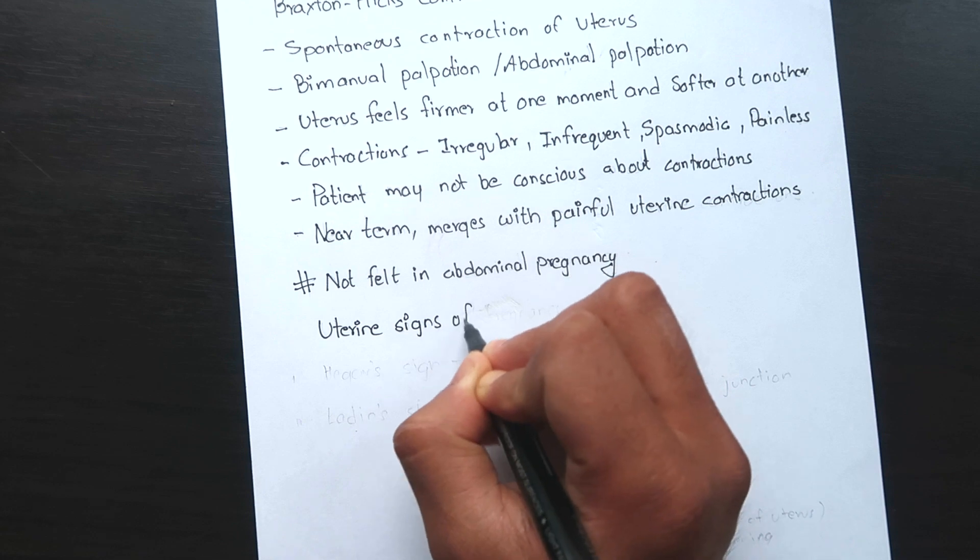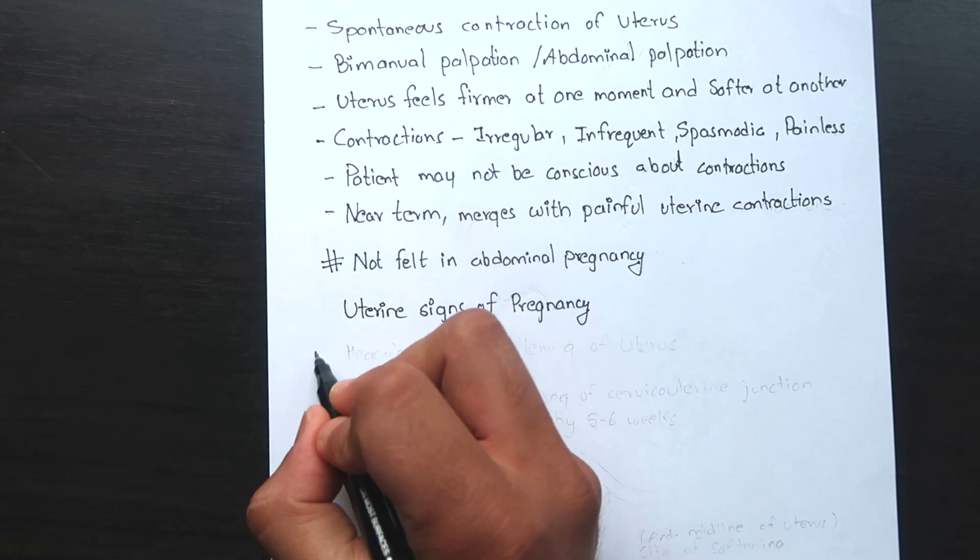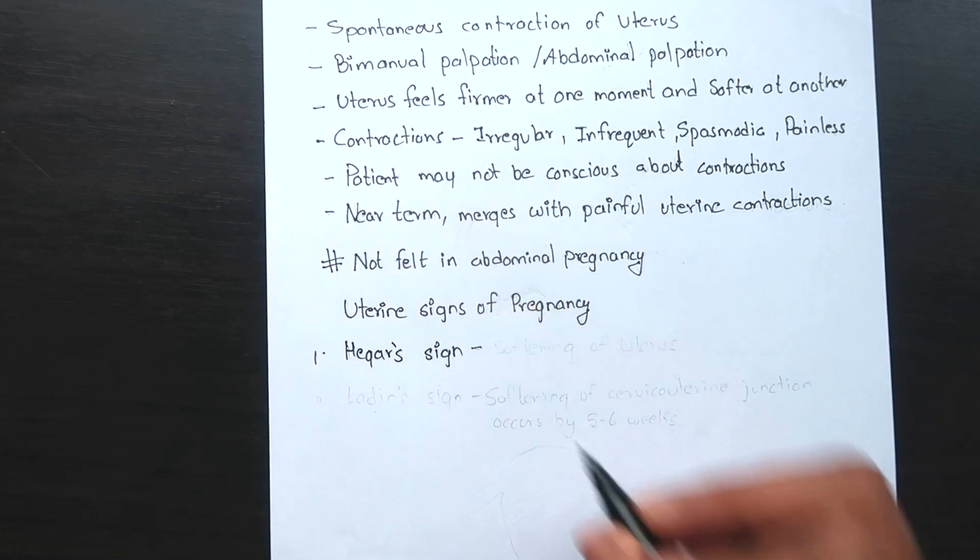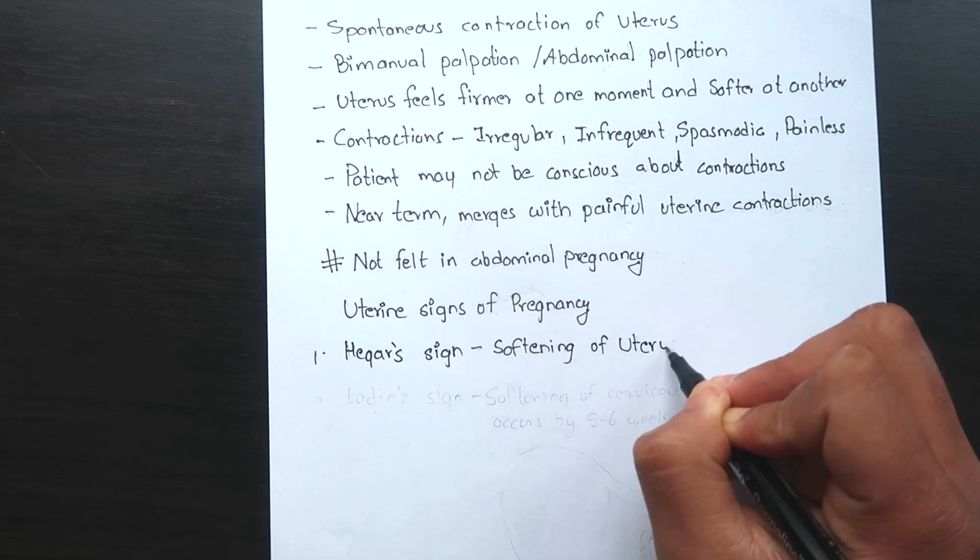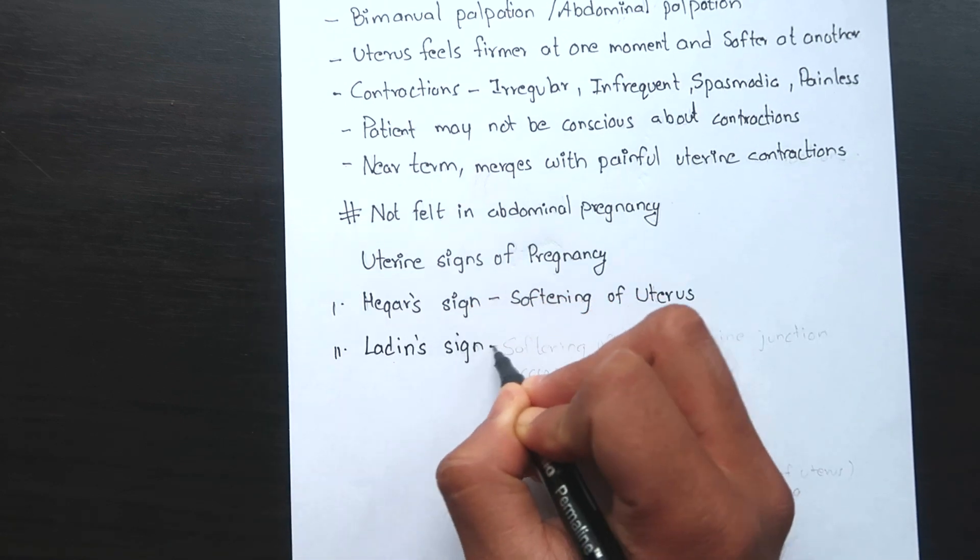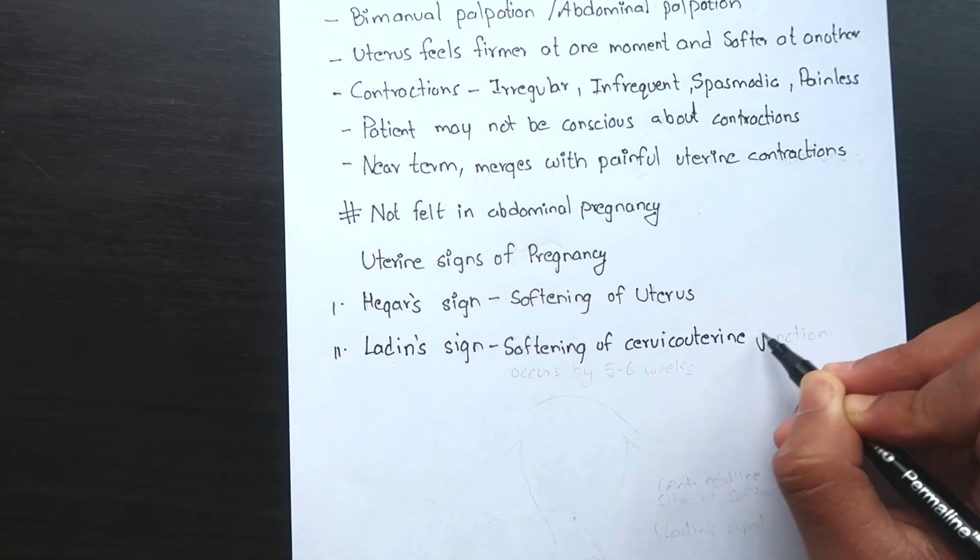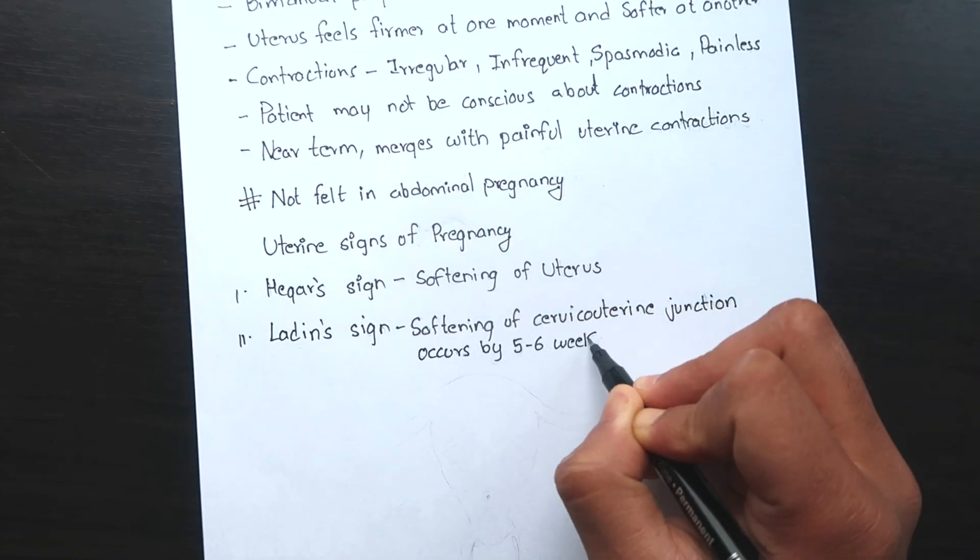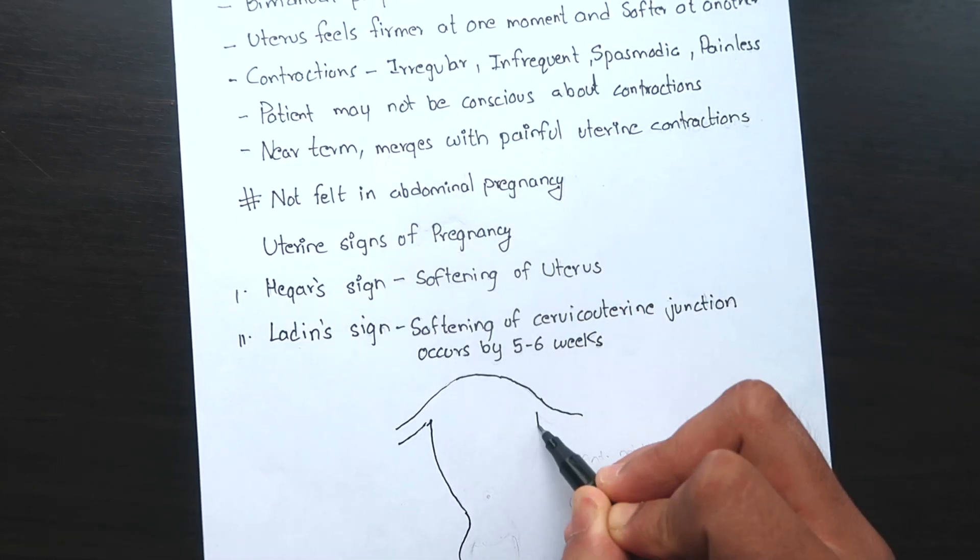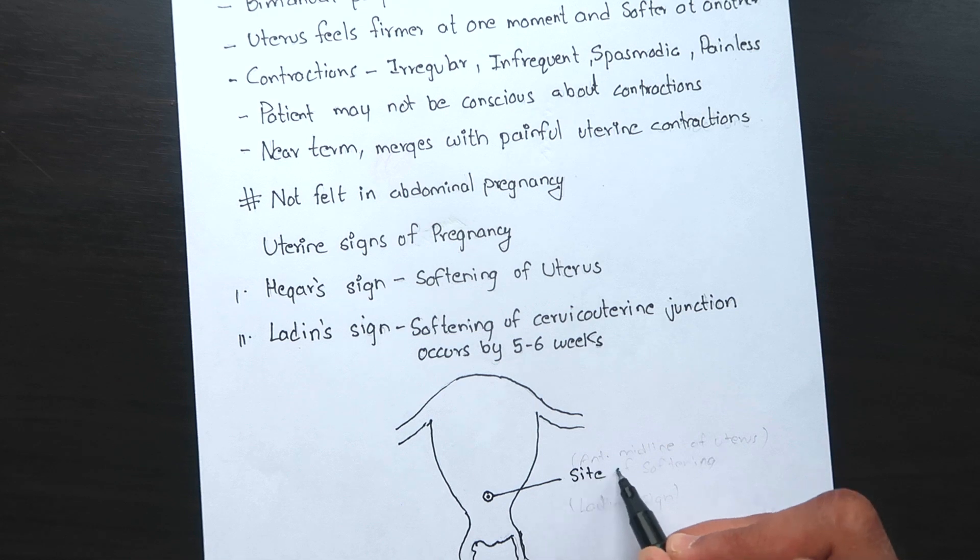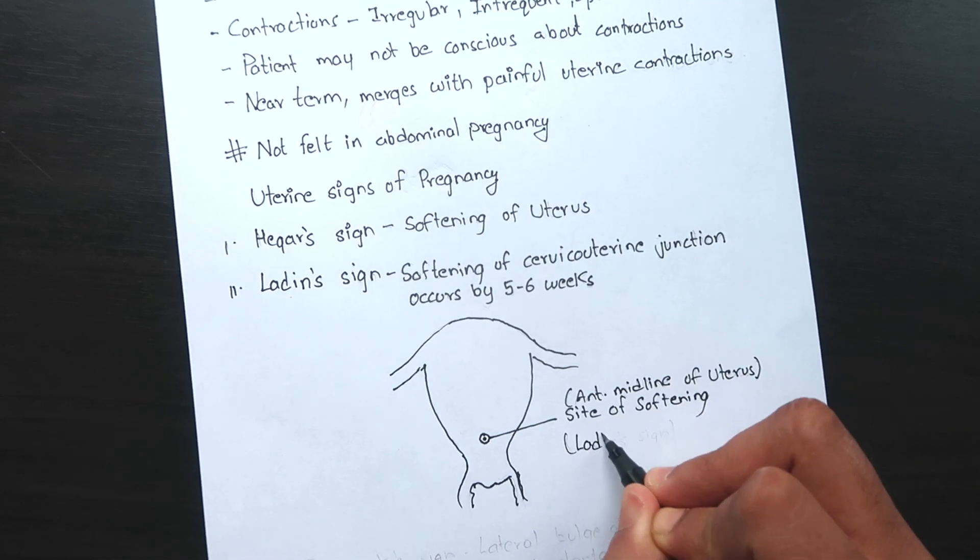Let's look at some of the uterine signs of pregnancy. Hegar's sign is softening in the consistency of the uterus. Ladin's sign is softening in the midline of the uterus, anteriorly at the junction of the uterus and cervix. It is detectable with manual examination at about 6 weeks gestation.